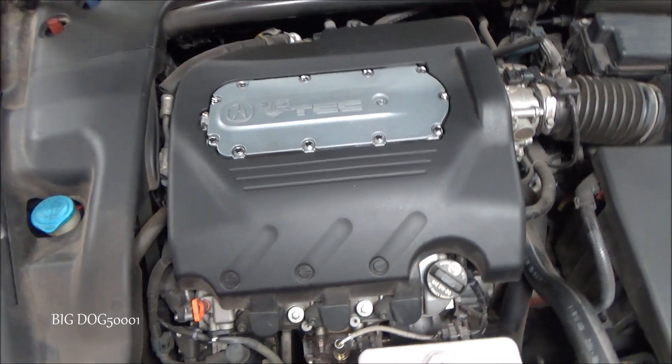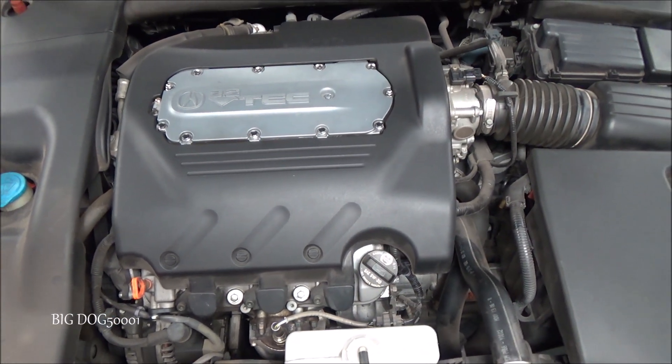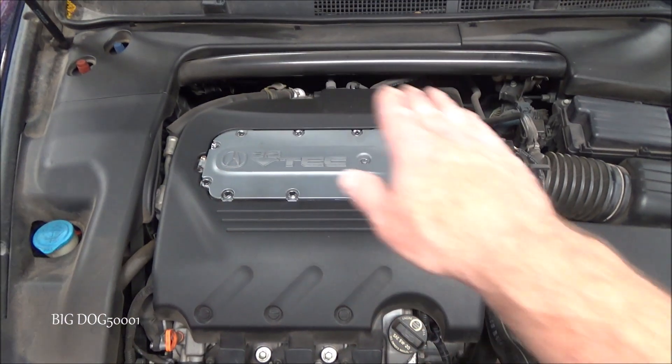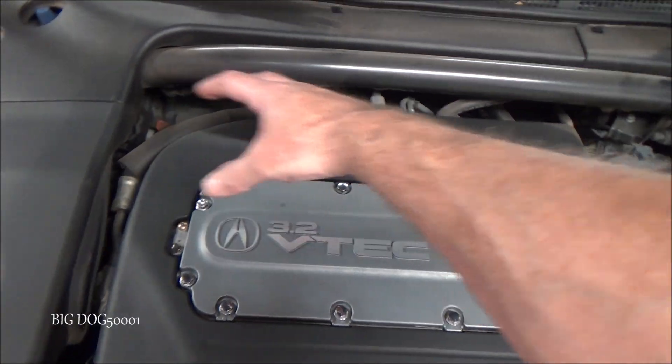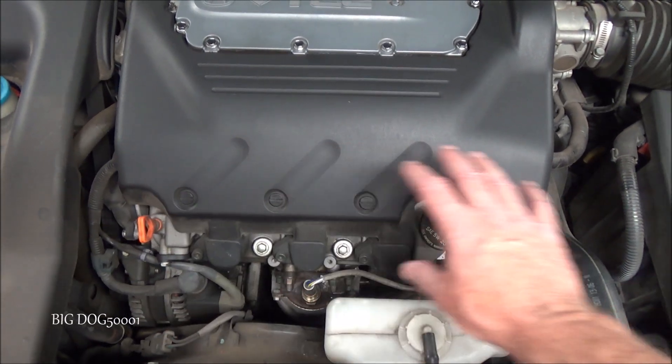Now the code we read was a P0159. And that's the computer saying hey there's an issue with one of the oxygen sensors. There's a slow response on it. And so that we're oriented, back here one, two, and three cylinders, that side of the engine is going to be bank one. Over here four, five, and six, that's going to be bank two.